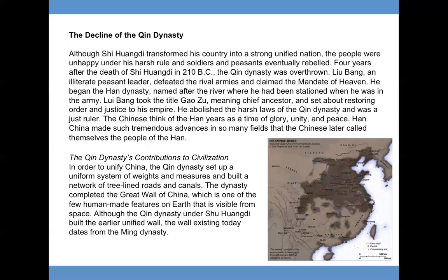The Decline of the Qin Dynasty. Although Shi Huangdi transformed his country into a strong, unified nation, the people were unhappy under his harsh rule and soldiers and peasants eventually rebelled. Four years after the death of Shi Huangdi in 210 BC, the Qin Dynasty was overthrown. Liu Bang, an illiterate peasant leader, defeated the rival enemies and claimed the Mandate of Heaven. He began the Han Dynasty, named after the river where he had been stationed when he was in the army. Liu Bang took the title Gaozu, meaning Chief Ancestor, and set about restoring order and justice. He abolished the harsh laws of the Qin Dynasty and was a just ruler. The Chinese think of the Han years as a time of glory, unity, and peace, and Han China made such tremendous advances that the Chinese later called themselves the people of the Han.